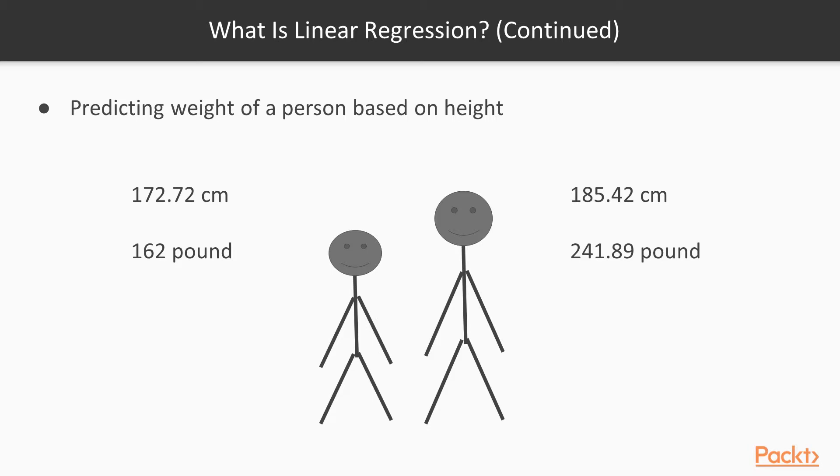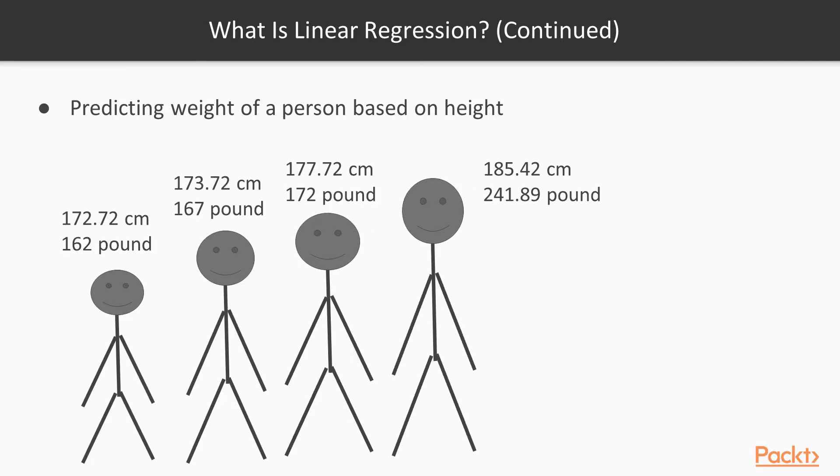Let's say the dataset consists of only two people. The first one has a height of 185 cm and a weight of 241 lbs. The second one has a height of 172 cm and a weight of 162 lbs. Similarly, you create a wide range of dataset.